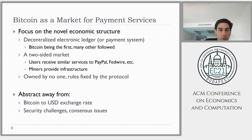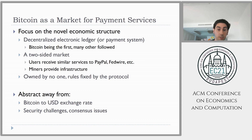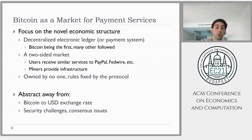Just to clarify before I get into the rest of the talk: for our purposes, we're going to abstract away from issues like the Bitcoin exchange rate, what makes Bitcoin valuable or not, or whether Bitcoin is secure. All of those are really interesting issues, but we're just going to assume that Bitcoin is working as a platform and ask what kind of market structure we get from this novel distributed system innovation.